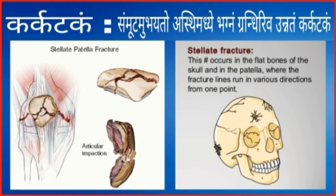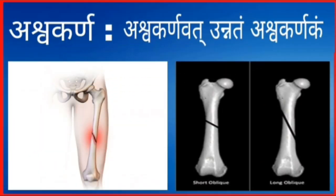Karkatakam: sammoodha mubhayado asti madde bhagnam grandhiriva unnatam. In a fracture site, the two fragments — that is the two ends of the bone — move apart, and there is a swelling in the middle resembling a tumor-like swelling. This type is known as Ashwakarna: vadu unnatam Ashwakarnakam.